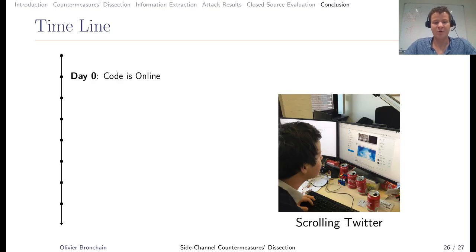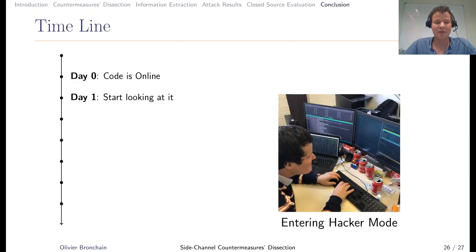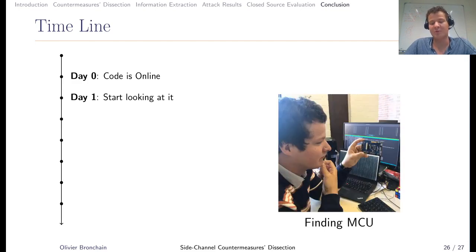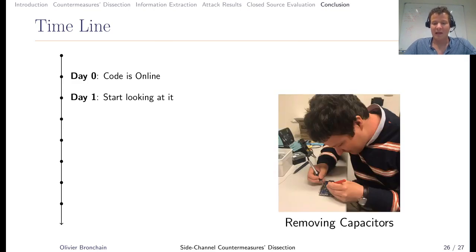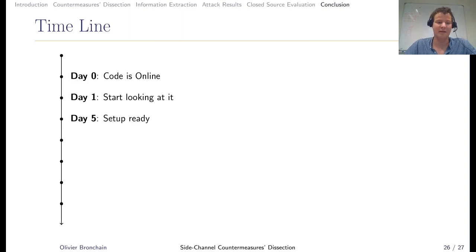On day 0, I was online scrolling Twitter, and I found some ARM manual proof tweets. I opened it and saw some protected code available. That was interesting. On day 1, I started looking at it, and I found an MCU that was able to run the library. I removed some capacitors, because removing capacitors is most of the time a good idea. I found the EM probe, and then my setup was ready after 5 days.